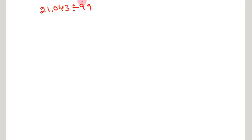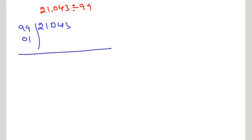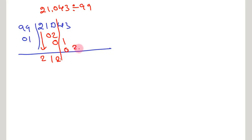The fifth problem is 21,043 divided by 99. Firstly, let us arrange this dividend and divisor in this manner. Take down the Nikhilam of 99, that is 0, 1. Separate the dividend by taking a straight line after the 10s place. Write down the first digit, 2. 2 into 0, 1 is 0, 2. You get 1. And 1 into 0, 1 gives 0, 1. Add this, getting 2. Again 2 into Nikhilam is 0, 2. Adding, you get 55 as the remainder. The quotient is 212 and remainder is 55.